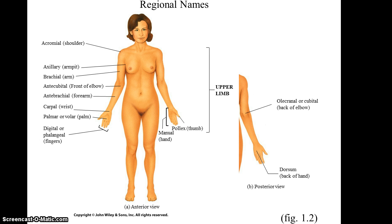For each upper limb, you have the acromial region or shoulder, the axillary region or armpit, the brachial region for the arm, the antecubital region for the front of the elbow, the antebrachial region for the forearm, the carpal region for the wrist, the palmar or volar region for the palm, and the digital or phalangeal region for the fingers.